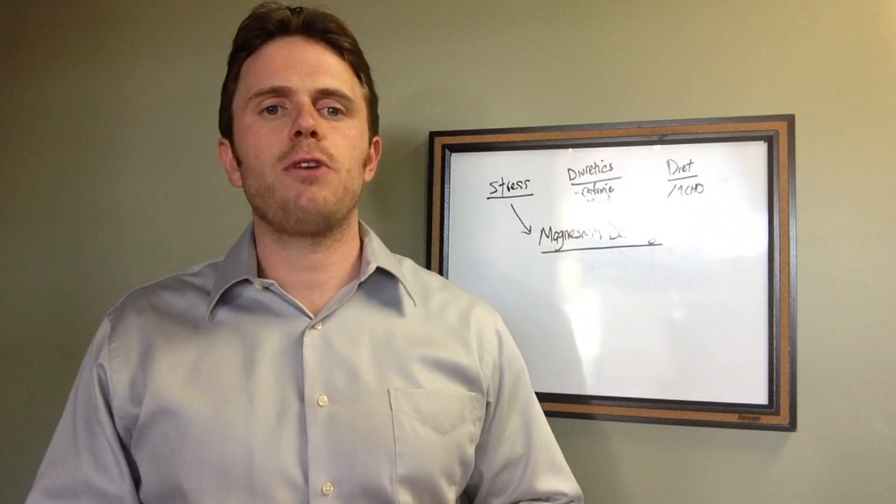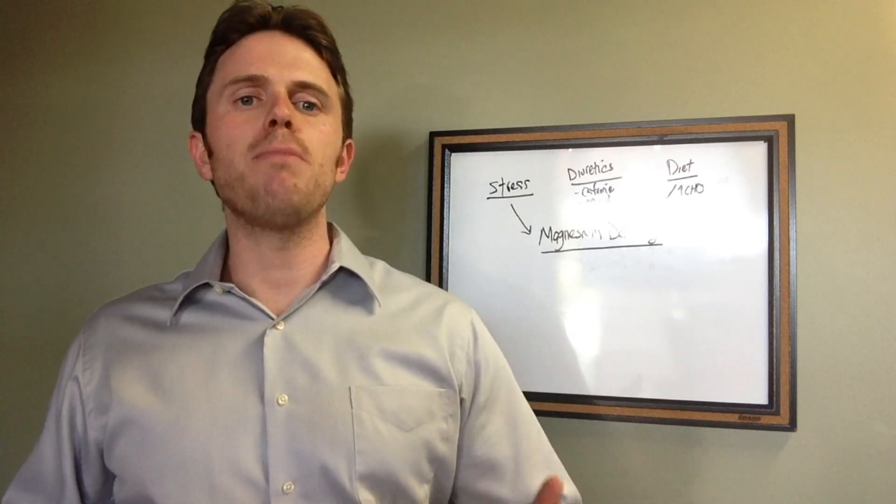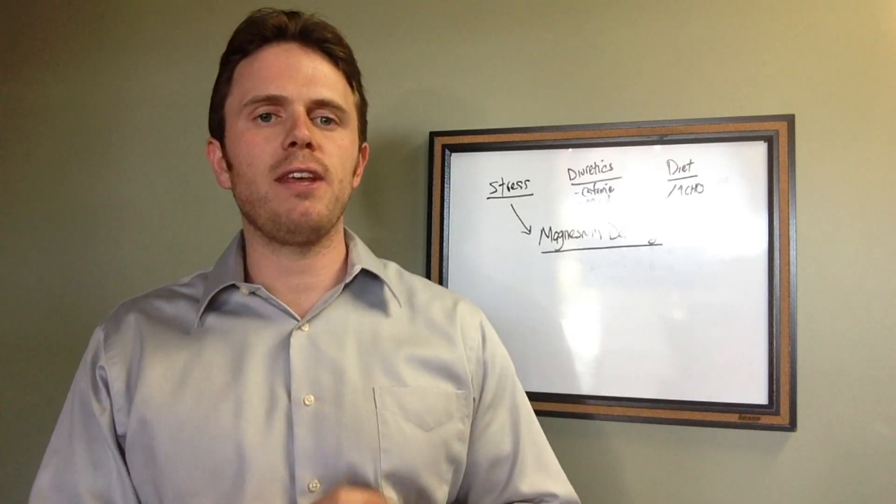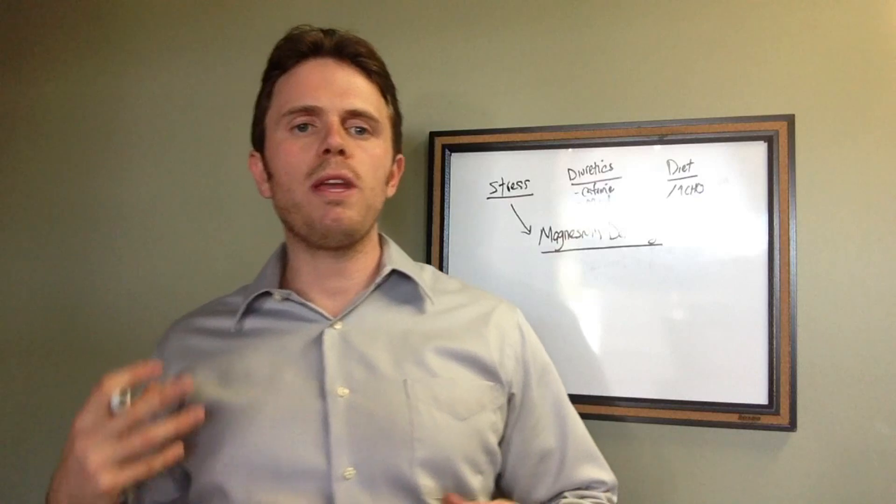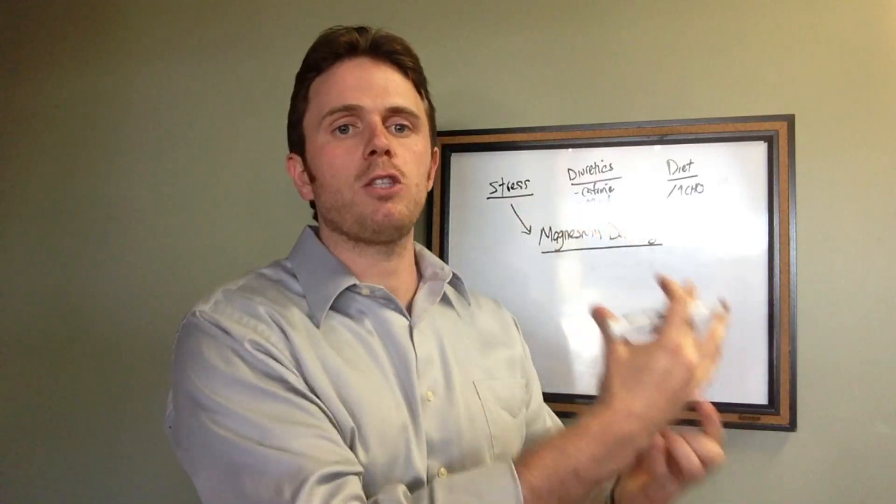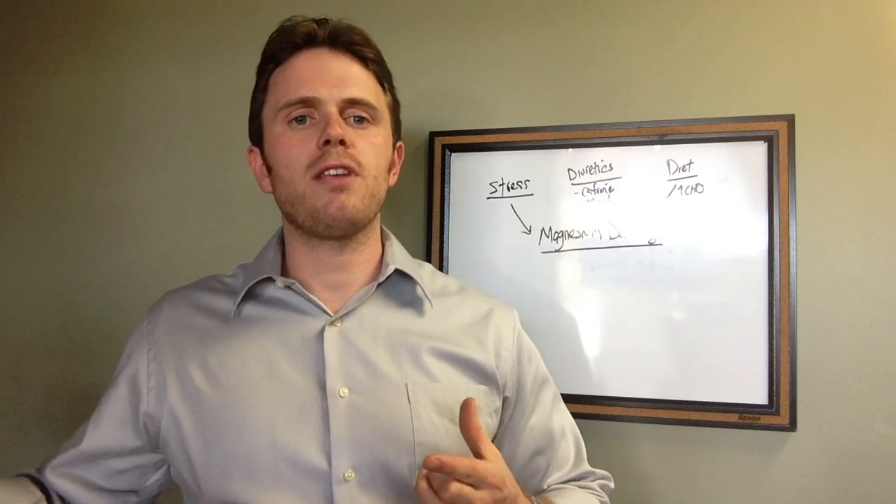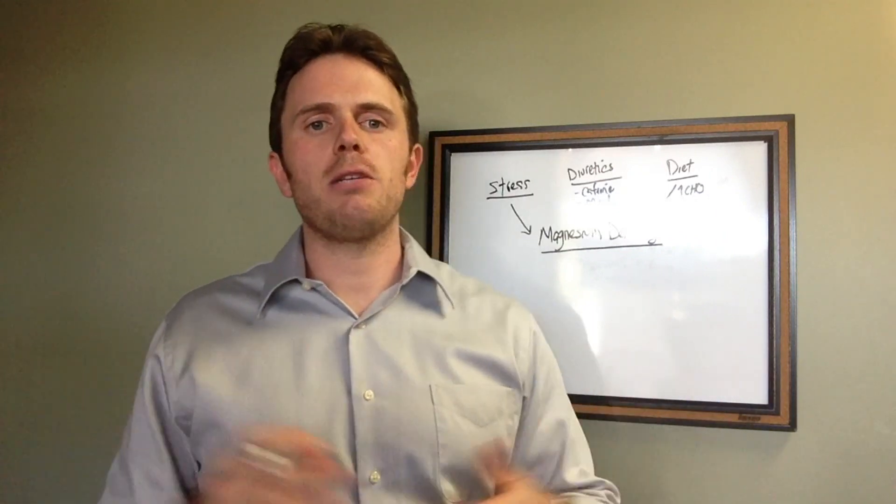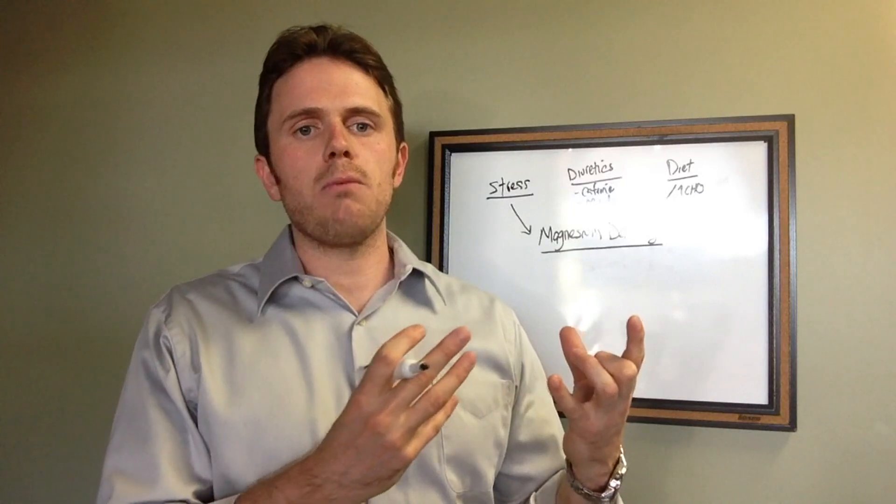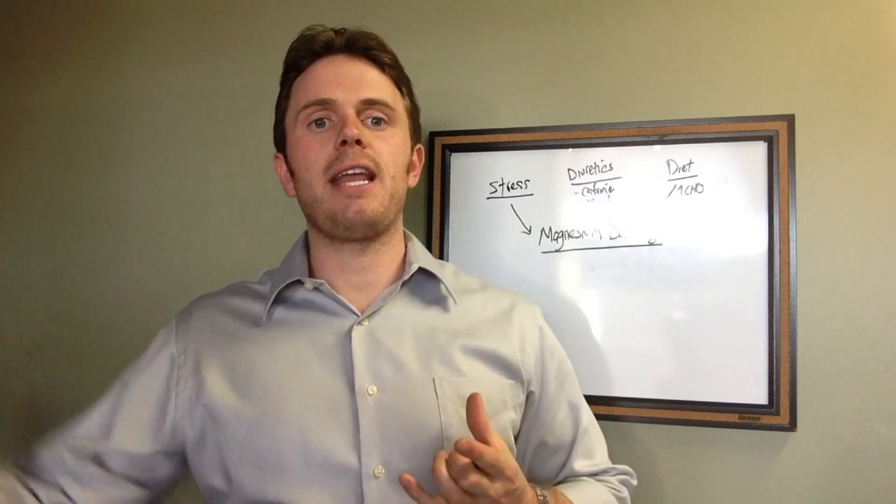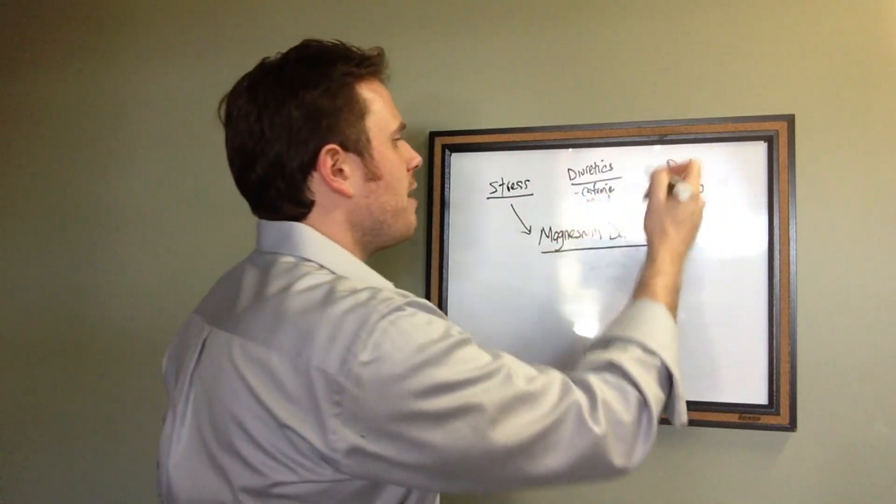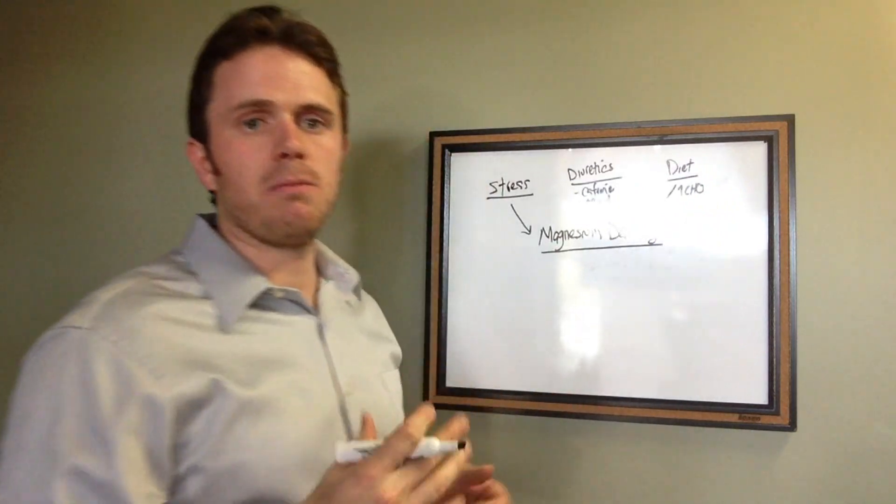When we take in excess carbohydrate our body uses certain minerals and B vitamins to help process these things in the Krebs cycle. We're eating foods that are devoid of nutrients while also eating foods that require a lot of nutrients to process them. We have a supply and demand factor where we are demanding more nutrients to break them down but we are not getting enough back in.